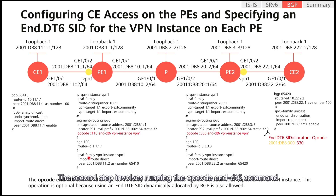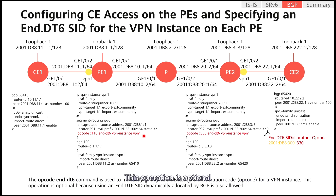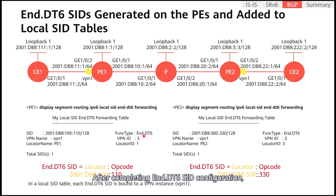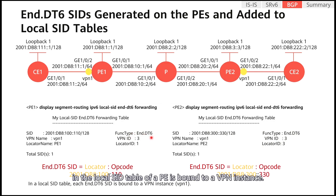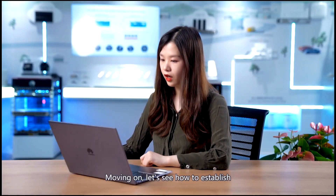The second step involves running the opcode and dt6 command to configure an End.DT6 SID for the specified VPN instance. This operation is optional because using an End.DT6 SID dynamically allocated by BGP L3 is also allowed. After completing End.DT6 SID configuration, we can see that each End.DT6 SID in the local SID table of a PE is bound to a VPN instance.